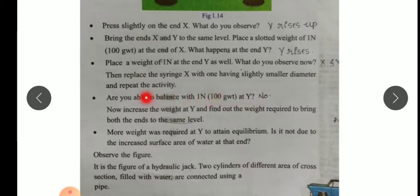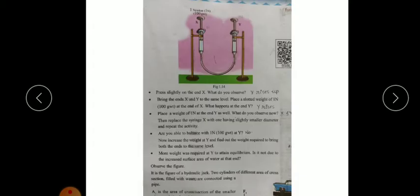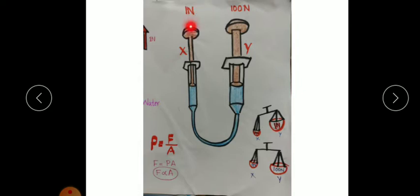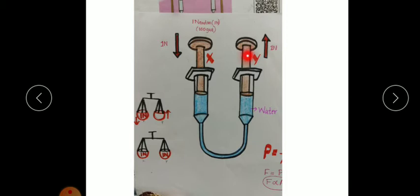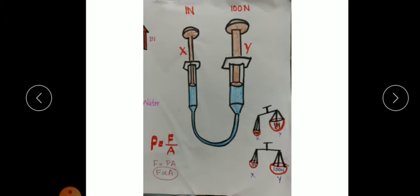Are you able to balance with 1 Newton at Y? Read the textbook: replace syringe X with one having a slightly smaller diameter and repeat the activity. So we keep 1 Newton on syringe X and 1 Newton on syringe Y. Are they balanced? In the equal-diameter case, keeping equal weights on both pistons made them balanced. But here, will they become balanced? No.